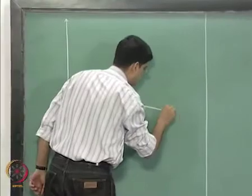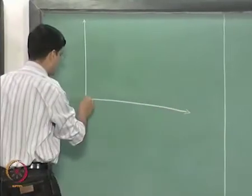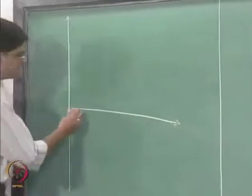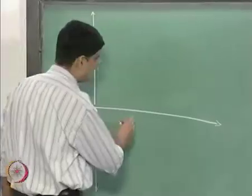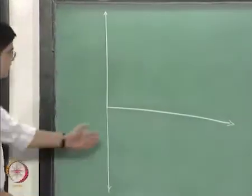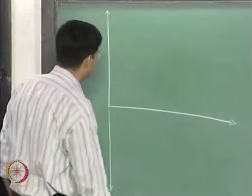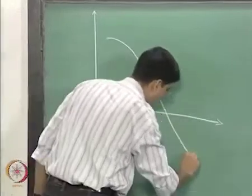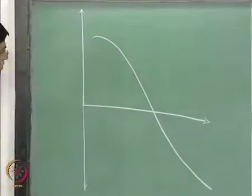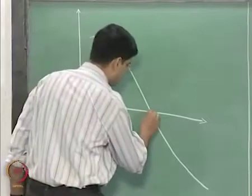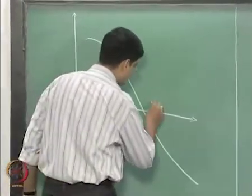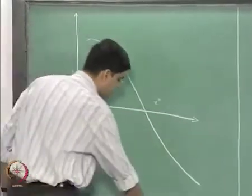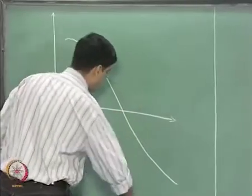Let us look again at the particular curve that we had previously. We will just look at points that go beyond x equal to 1. There was one more solution below x equal to 1 for that particular curve; we will currently not worry about that. This is going to be the solution that we are interested in, and we will mark that solution as x star.